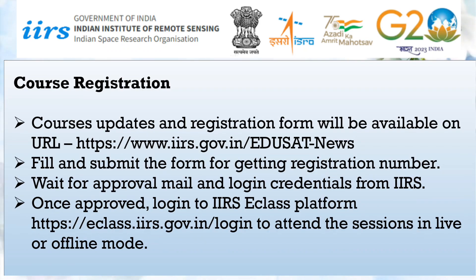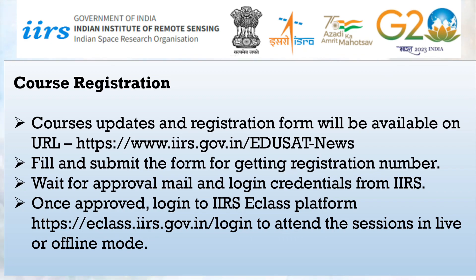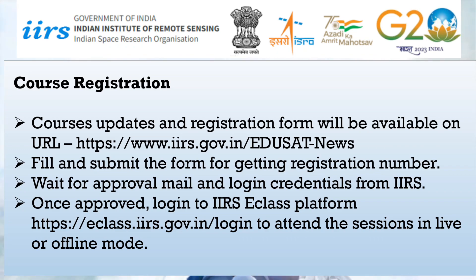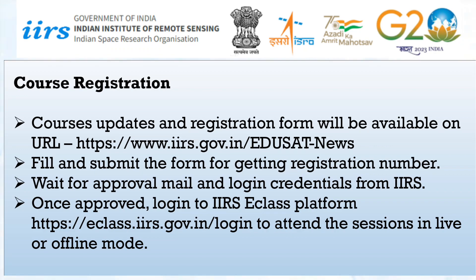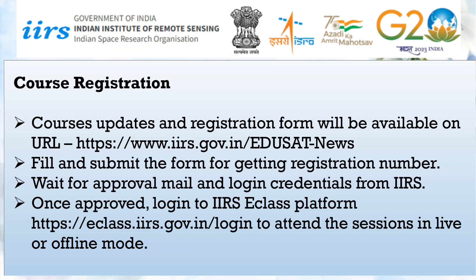To register for this course, fill up the registration form given on the link provided in the description. After submitting the form, you will get a registration number. Wait for your approval mail. Once IIRS approves your application, you will get login credentials. After that, you can log in on the eClass platform and attend the live training program.